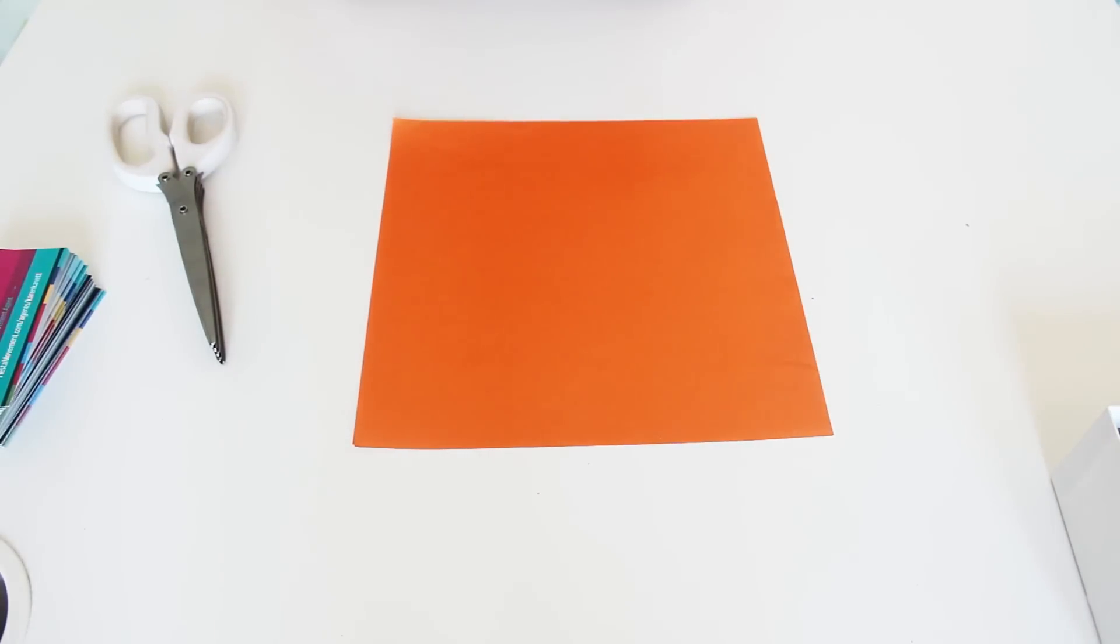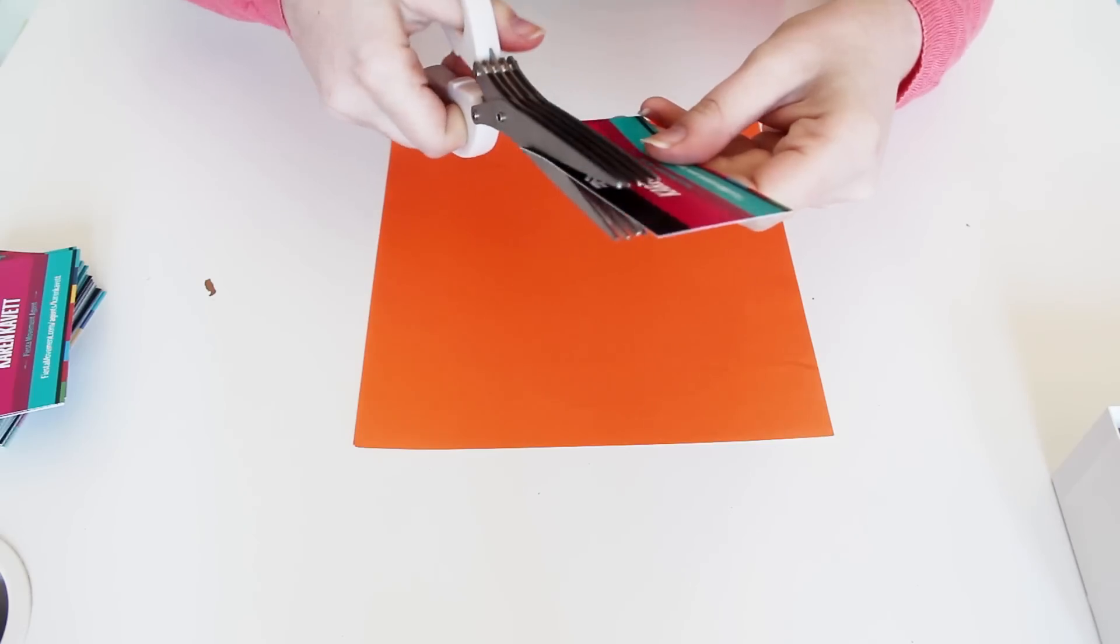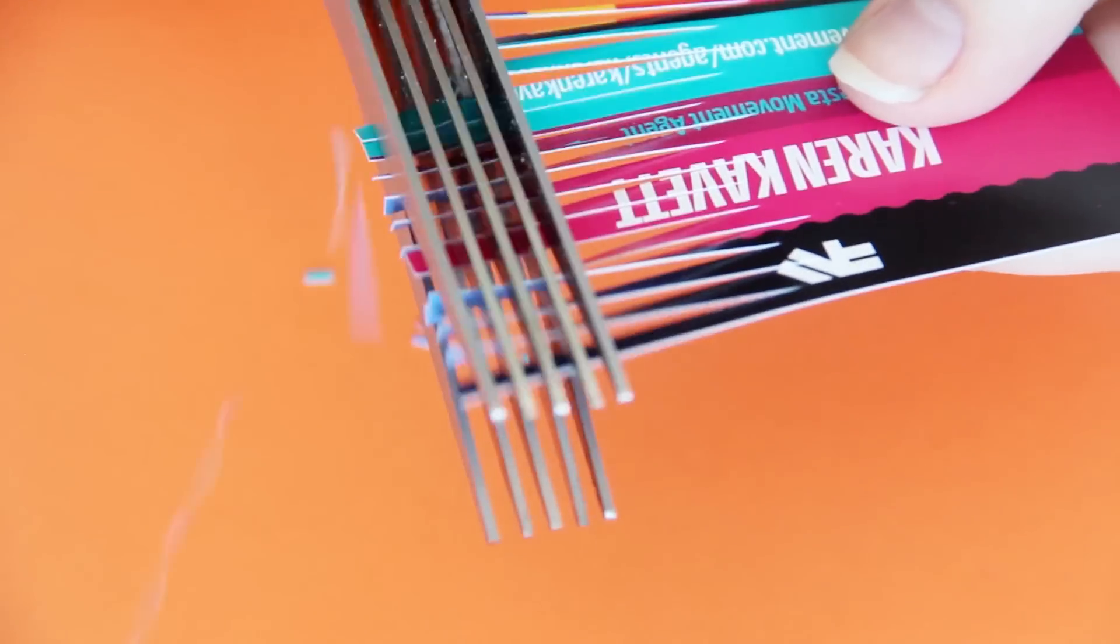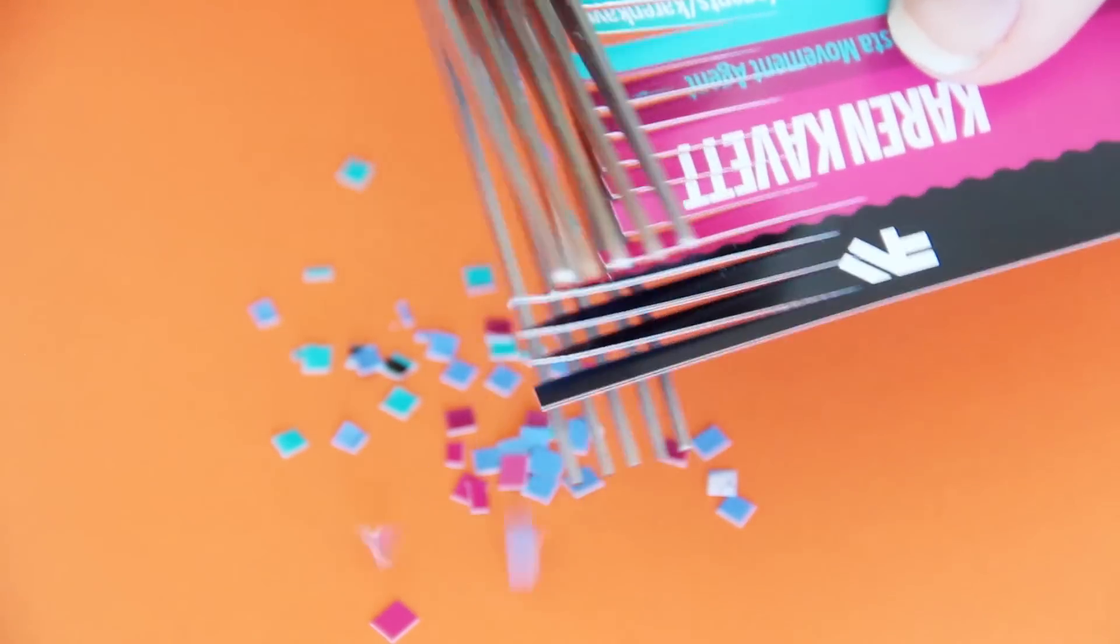So the first thing to do is to lay down a piece of paper to catch all of the little bits that we'll be cutting off. After that, just use the scissors to cut fringe down one side of the business card, and then cut up the other side to make tiny little squares of confetti.